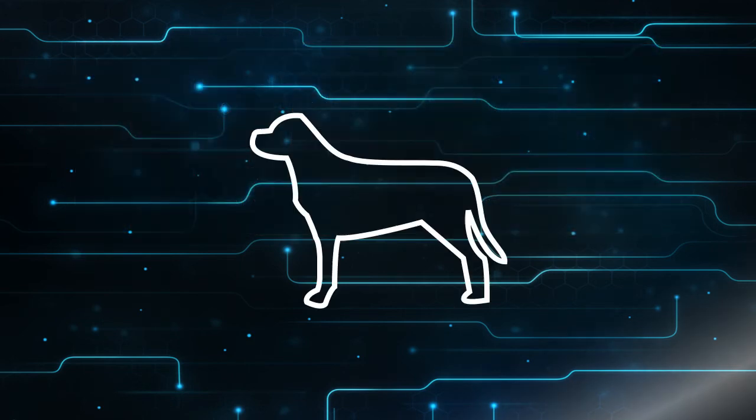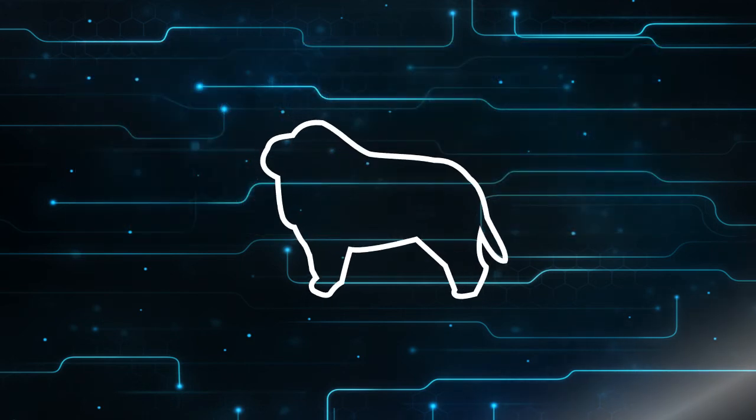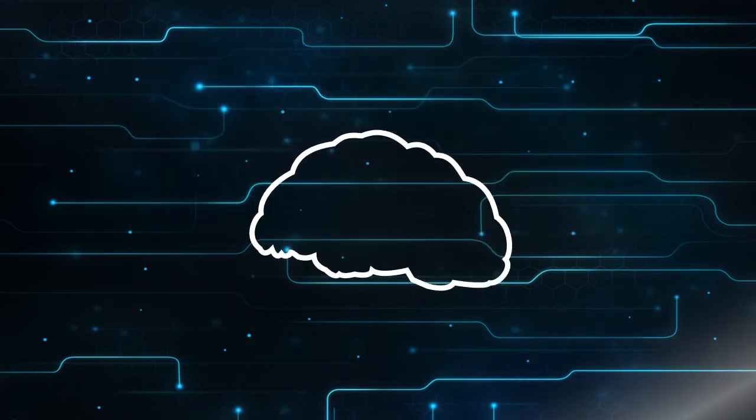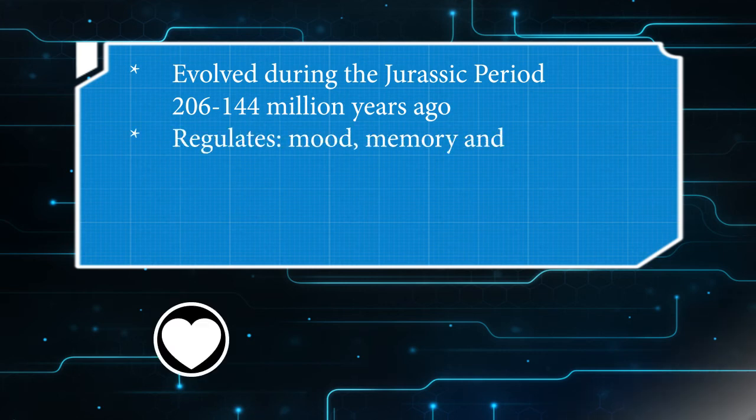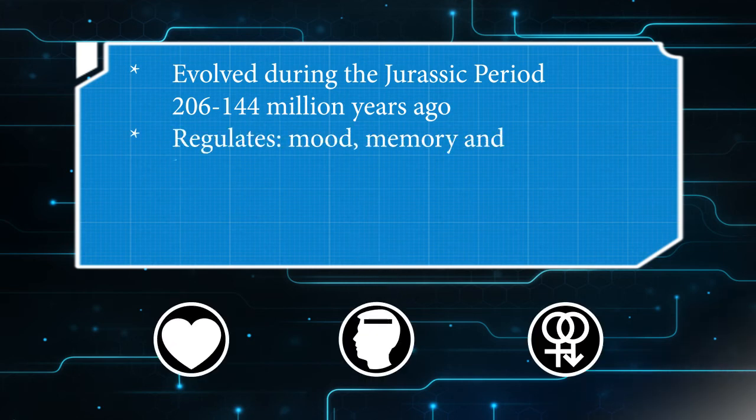Let's take a look at the limbic system, our emotional brain. It evolved during the Jurassic period. The limbic brain regulates mood, memory, and hormone control.